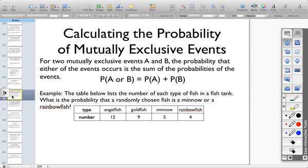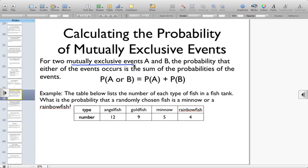Calculating the probability of mutually exclusive events. For two mutually exclusive events A and B, the probability that either of the events occurring is the sum of the probabilities of the events. The key here is that these are mutually exclusive, no common outcomes. The example says, the table below lists the number of each type of fish in a fish tank.